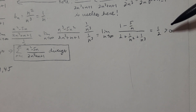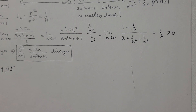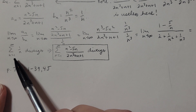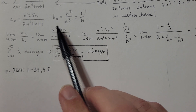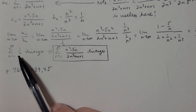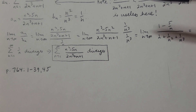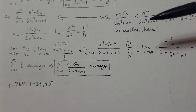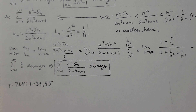1/2 is greater than 0, so the limit comparison test works. We were comparing to the harmonic series Σ 1/n from n=1 to infinity, which diverges. Therefore the original series also diverges by the limit comparison test.